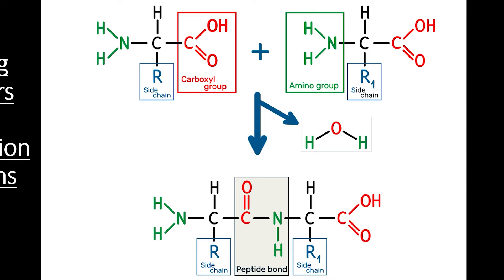During a dehydration reaction, these atoms are removed from the monomers and combined into a unit of water. Without these elements, one monomer is left with an excess of electrons, while the other is left with a deficit of electrons. This is the perfect situation to form a new covalent bond.